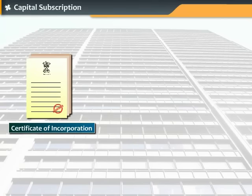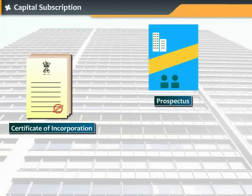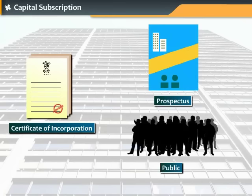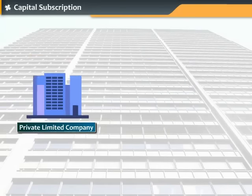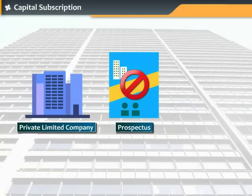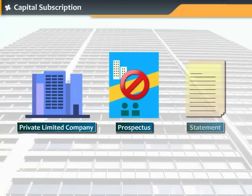Once the certificate of incorporation is received, the directors issue a prospectus to the public, which results in the start of capital subscription of the company. A private limited company cannot issue a prospectus; however, in lieu of a prospectus, a statement is submitted to the registrar.